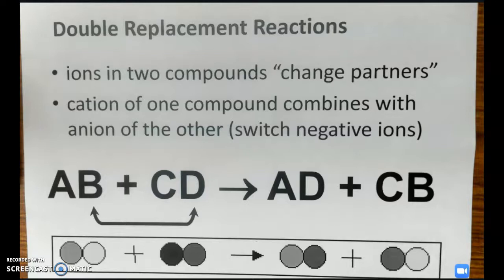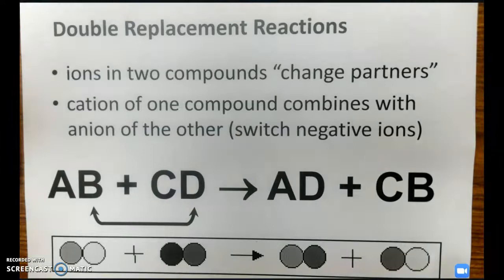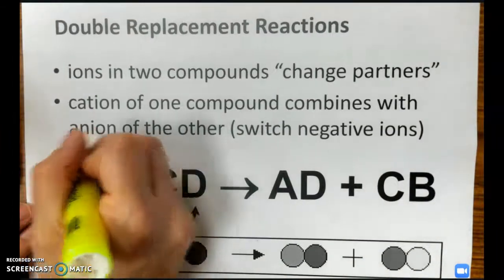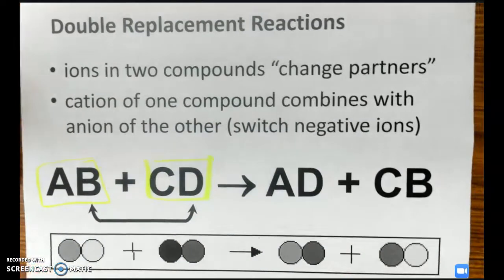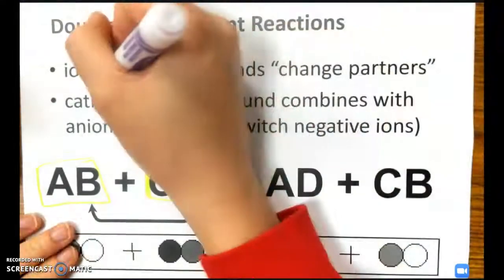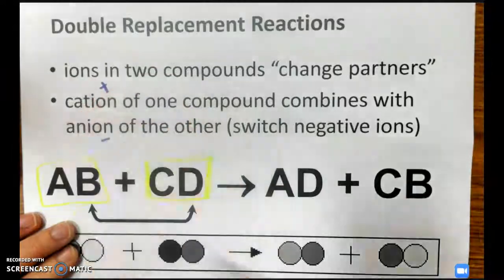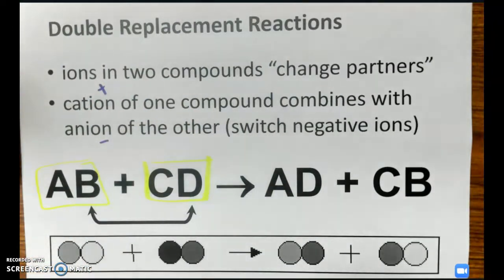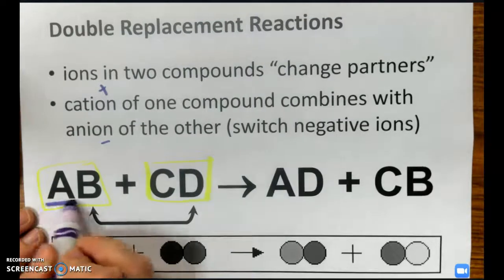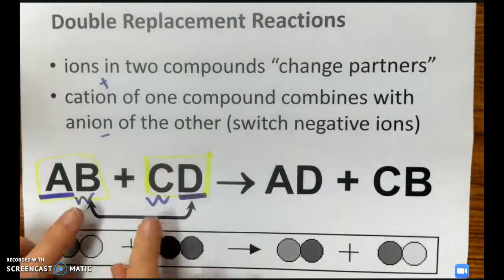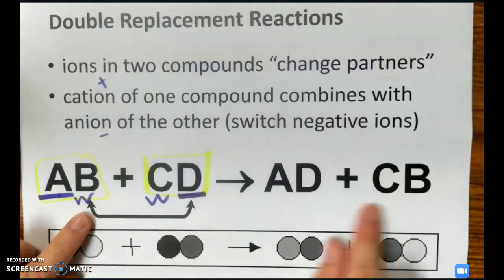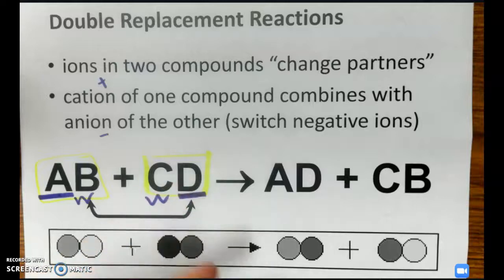So before we get started, what is a double replacement reaction? It's a reaction in which the ions in two compounds change partners. When you have two different compounds, not an element in a compound, they're going to swap. The cation, which is the positively charged ion, combines with the anion, the negatively charged one, from the other compound. An easier way to remember this is: outside goes with outside, and inside goes with inside, which gives us the products.